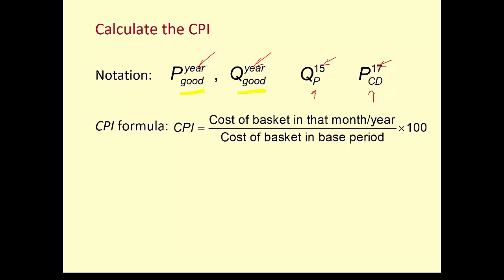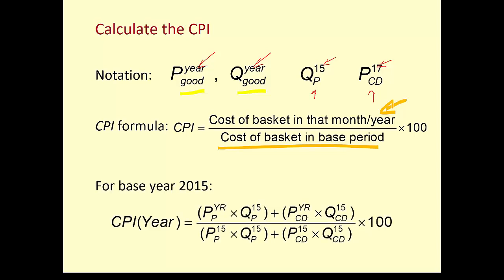This is the formula for the CPI. When we calculate the consumer price index, we use a basket of goods — usually the basket from the base year. We look at the cost of that basket in the base year as the denominator, and the cost of that same basket in the year we're calculating the CPI as the numerator. We take that ratio and multiply by 100.